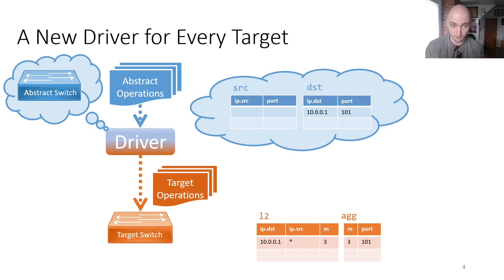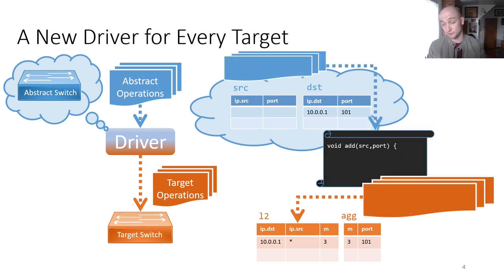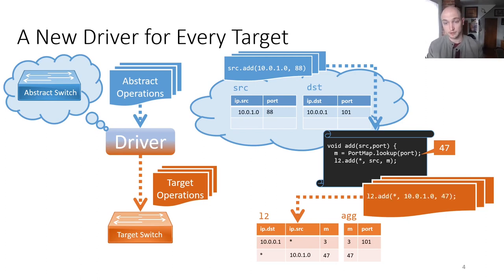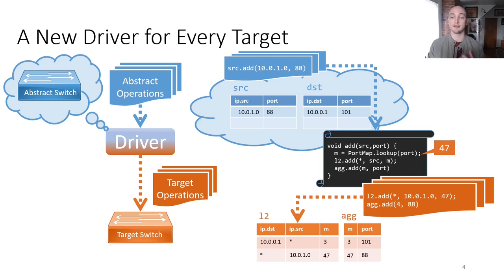We want to map operations on this pipeline to a target two-stage pipeline that first matches on both the source and destination addresses in the L2 table, and then sets a metadata field that is subsequently matched on in the aggregation table to determine the output port. Let's work through the driver code that translates rules in the source table. We'll insert a rule that sends traffic originating from source 10.0.1.0 out on port 88. First, we compute the metadata that is set in L2 and matched on in the ag table — in this case, we mint an unused value, 47, because there is no row in ag for port 88. Then we insert into L2 a rule that wildcards the destination and matches on the source address from the abstract program — the star indicates a wildcard match. Finally, we insert a rule into ag that assigns the port to 88.